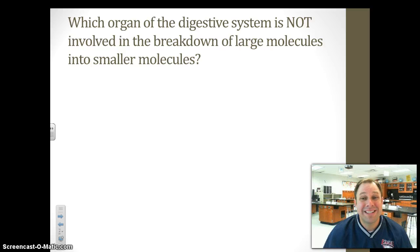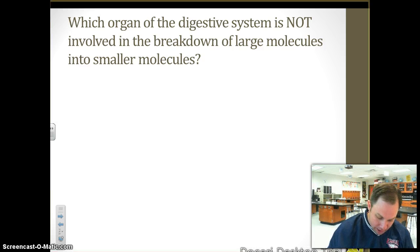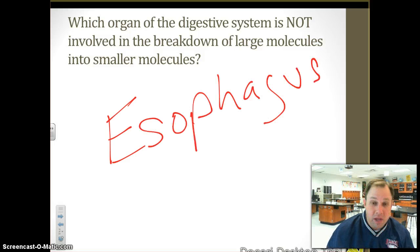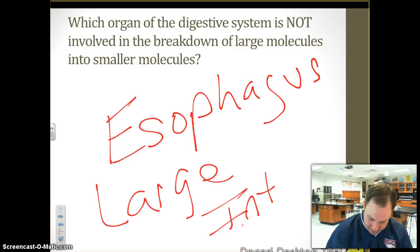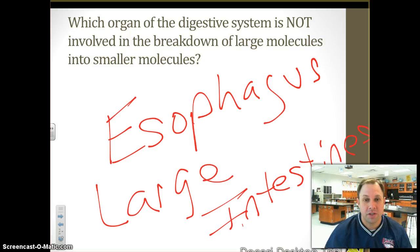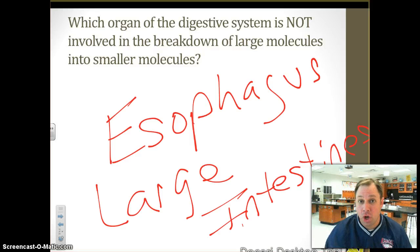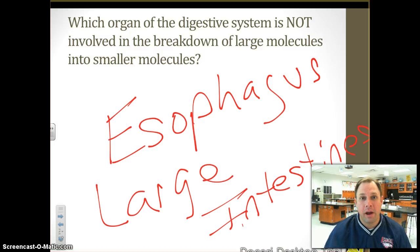Which organ in the digestive system is not involved in the breakdown of large molecules into smaller ones? We actually have two: the esophagus and the large intestines. The esophagus is just transporting food from the mouth to the stomach using peristalsis. The large intestines are not doing any type of breakdown of food — we're just absorbing the water out of the food before it gets removed from the body.